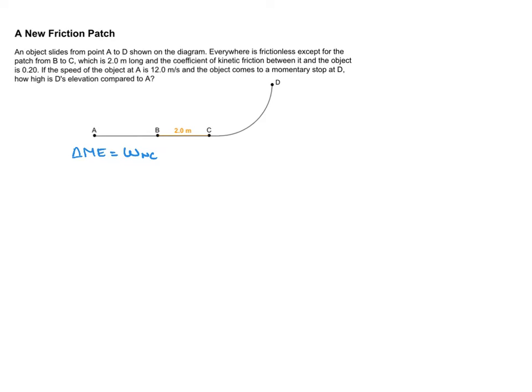It's going to do negative work on this object. This is the compact version of the conservation of energy, the longer version, but maybe the one that's more helpful when we go to solve the problem, looks like this. So basically the starting mechanical energy plus any work that was added or maybe subtracted from the starting mechanical energy is going to equal the total final mechanical energy.